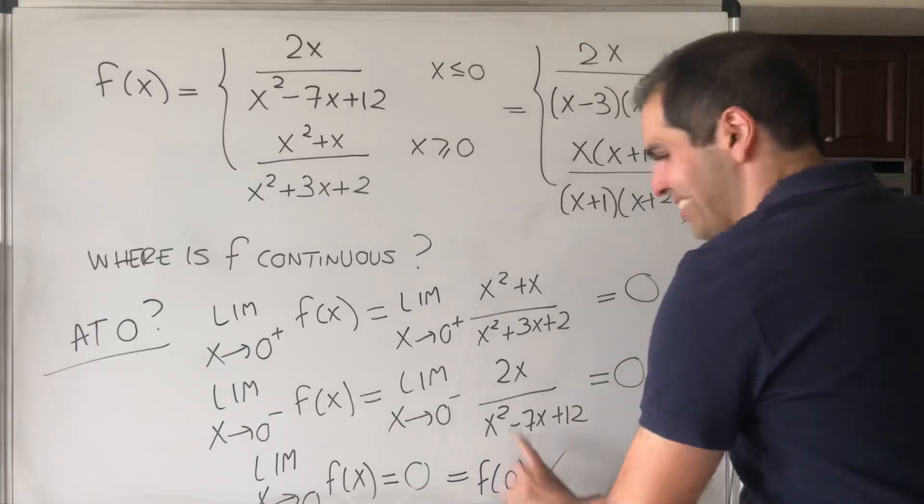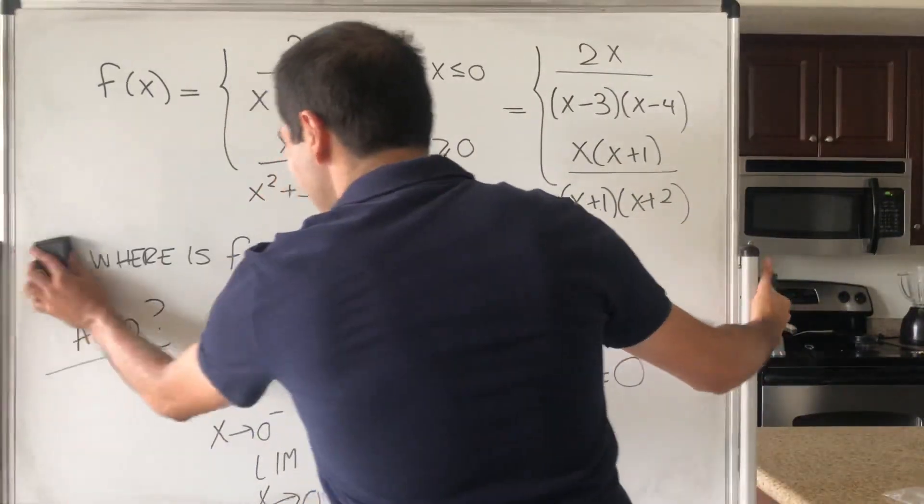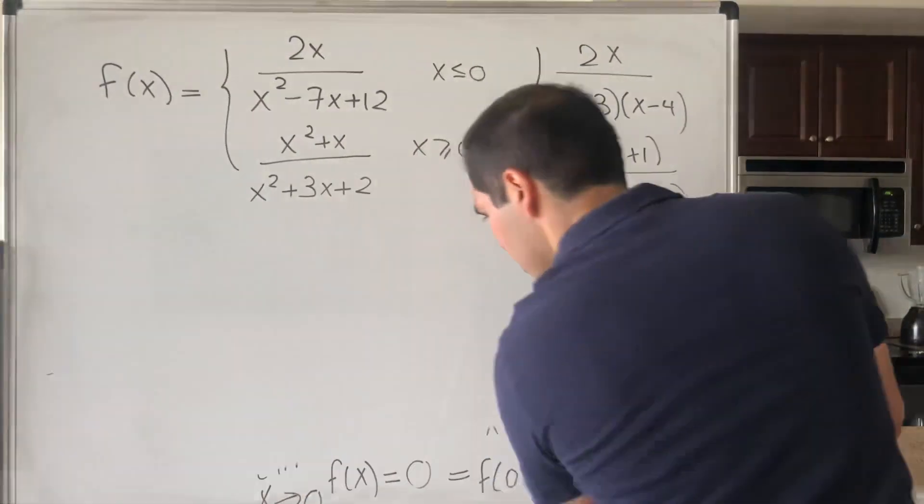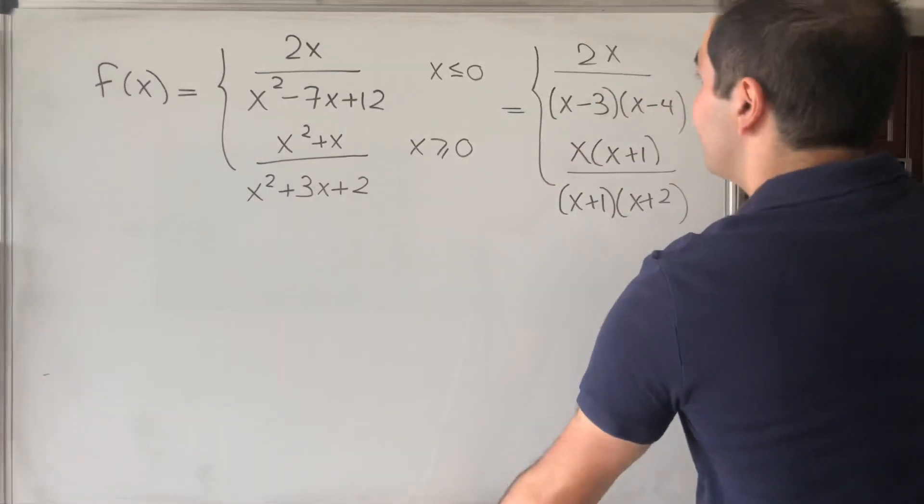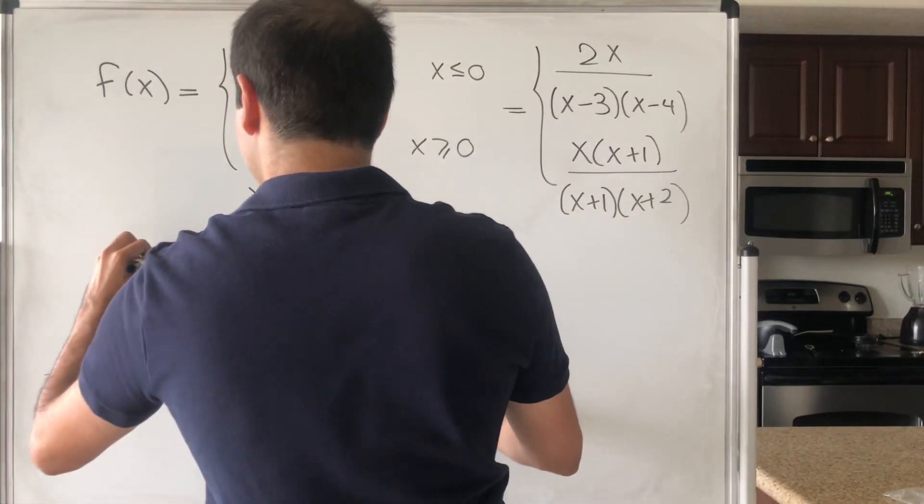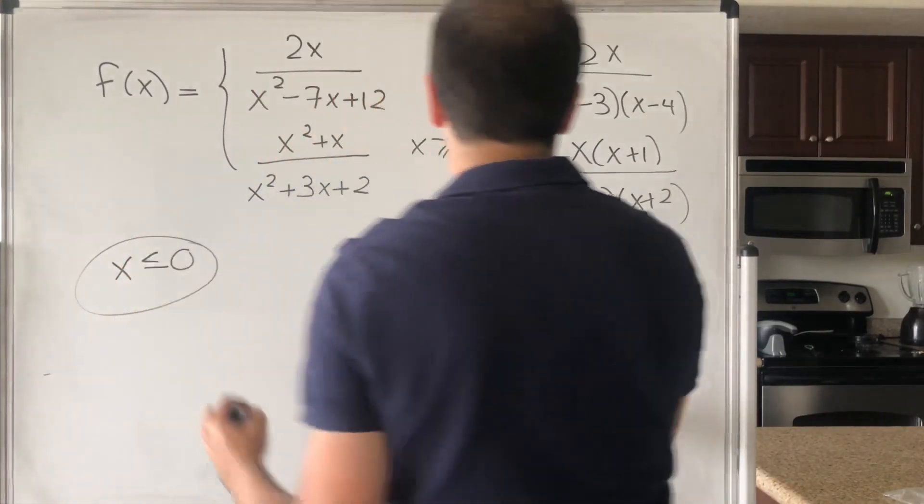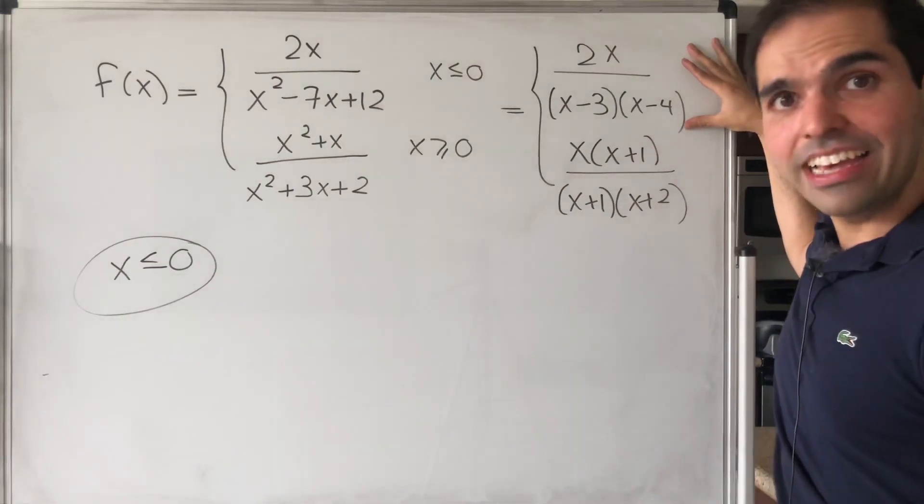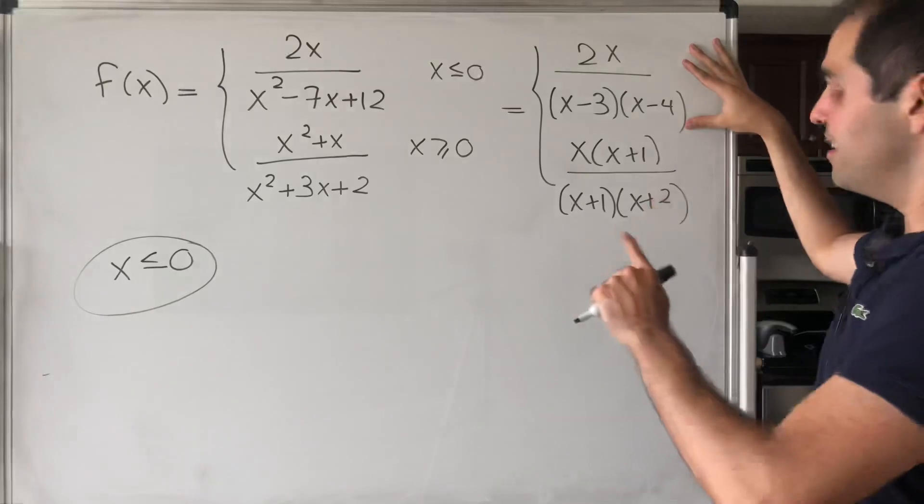And that is actually super interesting, because let's figure out what this is. So suppose, for example, that x is less than or equal to 0. Is it discontinuous somewhere negative? Well, let's see.